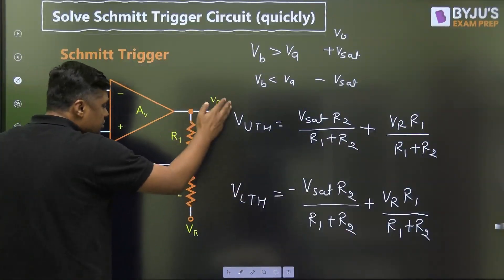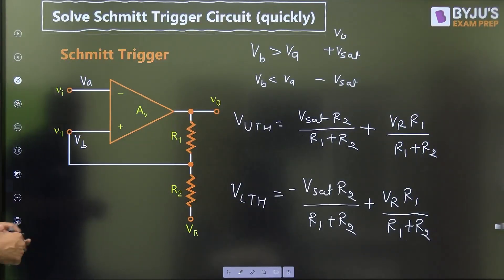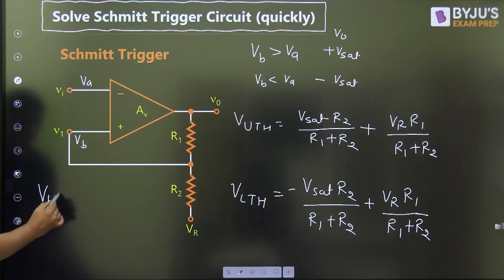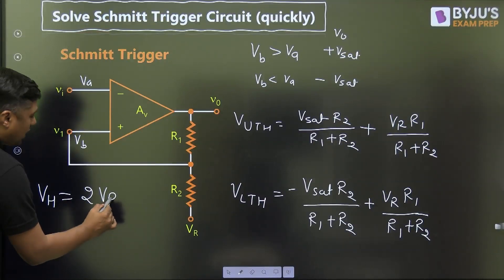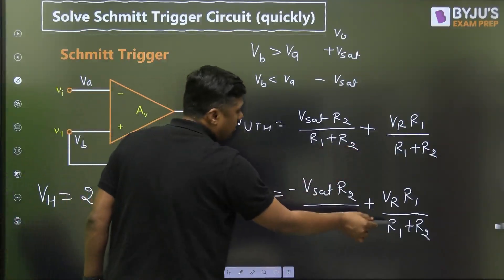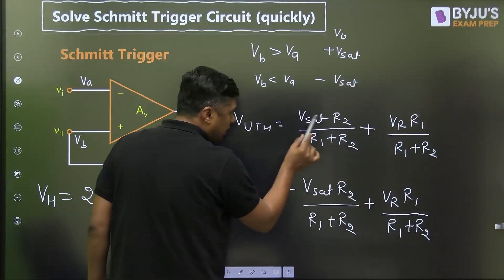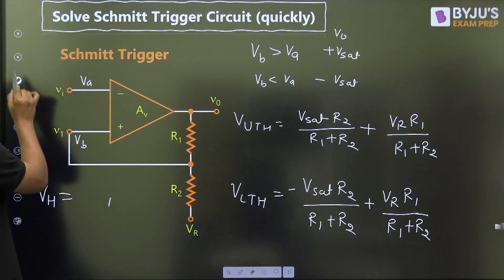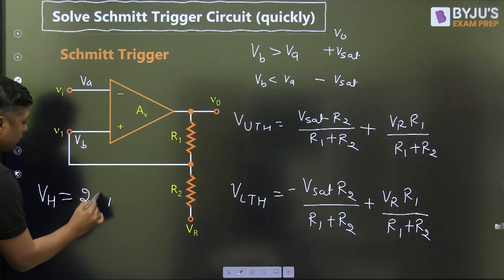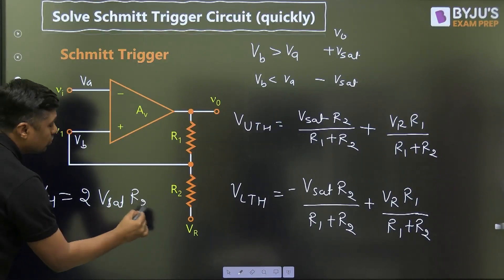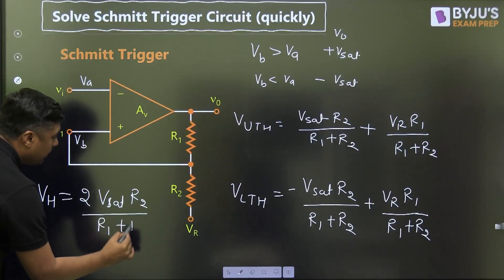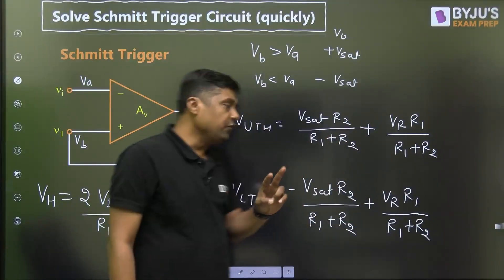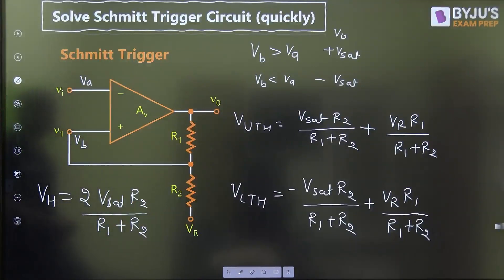The difference of these two is called the hysteresis voltage. So the hysteresis voltage VH equals V-UTH minus V-LTH, and you will find VH equals 2 times V-sat into R2 divided by R1 plus R2, because the VR terms cancel out. The hysteresis voltage is therefore independent of reference voltage. These are the important formulas: upper threshold, lower threshold, and hysteresis voltage equals 2 times of this value.